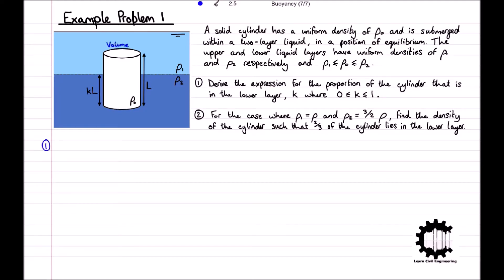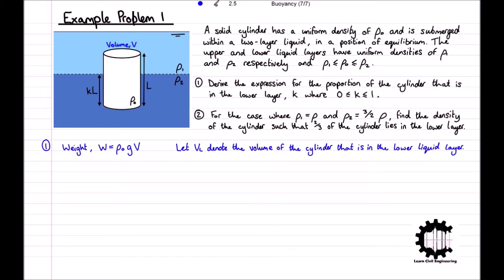The cylinder has a volume of V, and so the weight of the cylinder W is equal to rho_0 g V. Using Archimedes' principle, we know that the buoyancy force applied to the cylinder is equal to the weight of the liquid displaced by the cylinder. Letting V_L denote the volume of the cylinder that's in the lower liquid layer, the buoyancy force F_B is equal to rho_1 g times (V minus V_L) plus rho_2 g V_L.